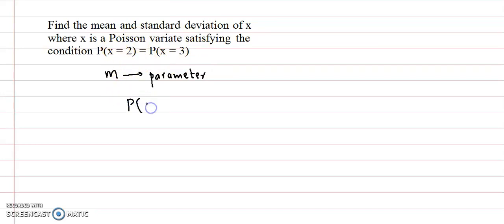We have given probability at x equal to 2 is equal to probability at x equal to 3. Now we know that for Poisson distribution, the probability function is given by e raised to minus m into m raised to x upon x factorial. So this formula we apply to both.